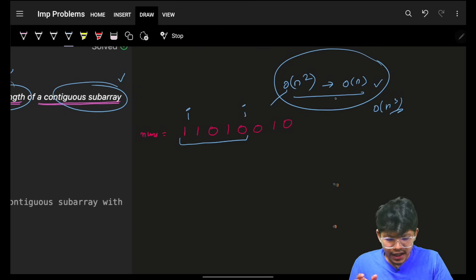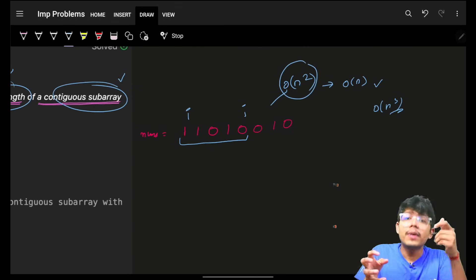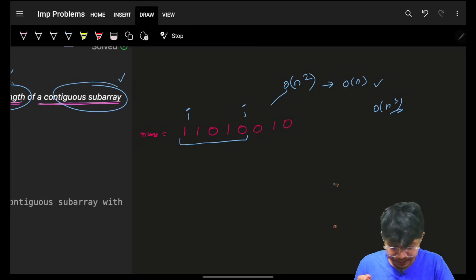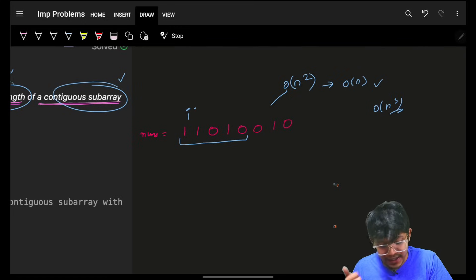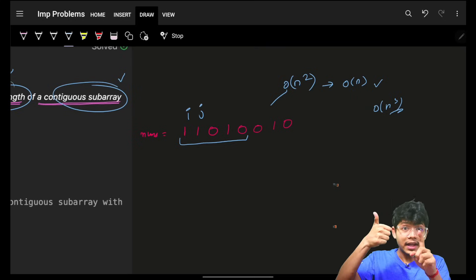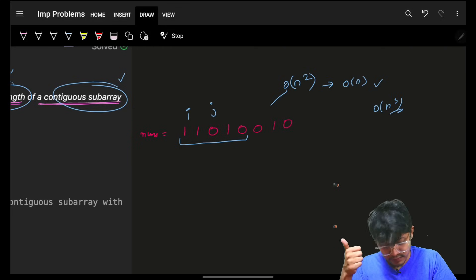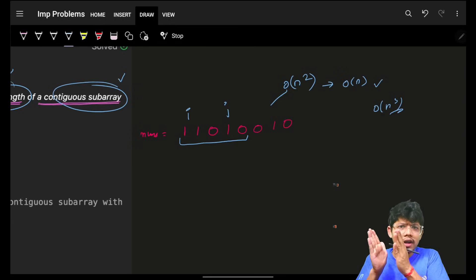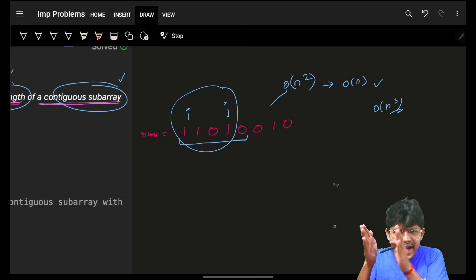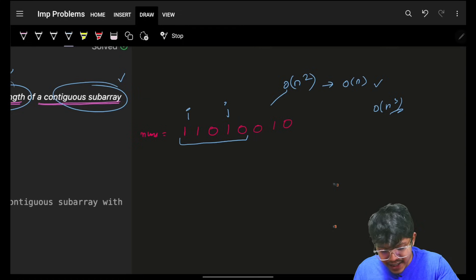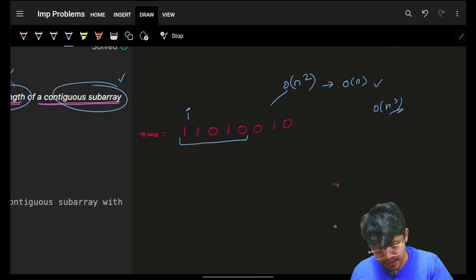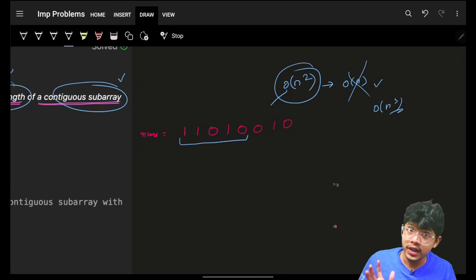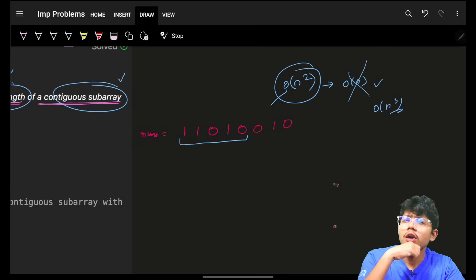We can improvise easily. Rather than generating the subarray first and then iterating on it — which is O(n) — we can club them together. While moving my j pointer, I can keep on counting: count of one, count of zero, incrementally. That way I don't need to iterate the full range again, reducing complexity to O(n²), which is still high.